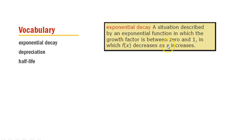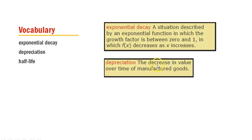So as time goes on, something is going away. And this happens because the growth factor is between 0 and 1. What depreciation is, is the decrease in value over time of manufactured goods or of anything. So how much is that going down? We'll see an example of that here momentarily.